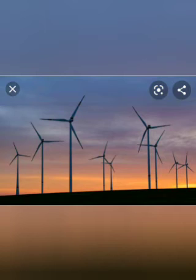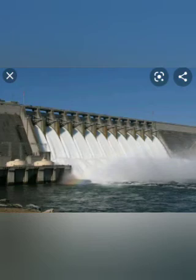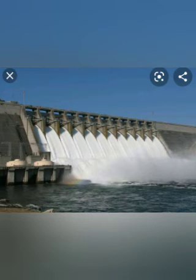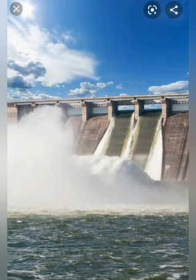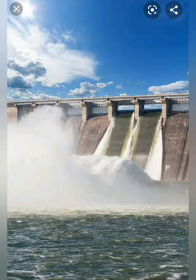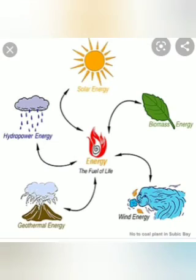Water energy, also known as hydroelectric energy. For centuries the power of running water was used in windmills to grind grains. The power of running water is now used to generate electricity. A dam is built at a height to trap river water and form a reservoir. The water from the reservoir is made to fall on a turbine below. The falling water rotates the turbine blades, and the rotating turbine powers a generator that produces electricity.